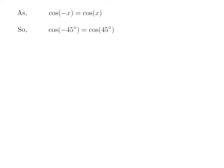Let us apply the above identity for cosine of minus 45 degrees. Here, x is 45 degrees. So, cosine of minus 45 degrees is equal to cosine of 45 degrees.